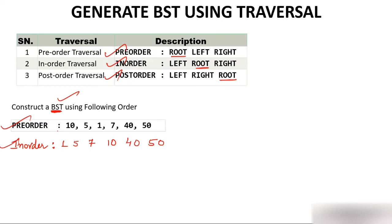If you have seen the video on creation of tree, you will be able to understand. If not, I will explain everything again. Now we have two orders: pre-order and in-order. I don't know what the tree will look like, but I know that the root of the tree will be 10. Why? Because the first element of pre-order is the root. So whatever the tree will be, 10 will be the root.